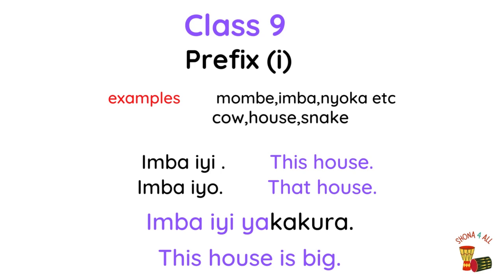Class 9, prefix i. Example nouns:ombe, imba, njoka. Example phrase: Imba iyi yakakura — this house is big. Imba iyi — this house.